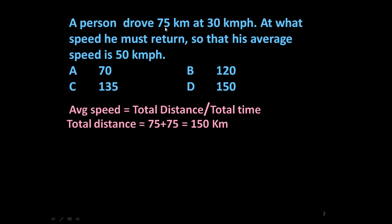For the first 75 km he is traveling at a speed of 30 km per hour. So time required for the first 75 km is 75 upon 30 equals 2.5 hours.